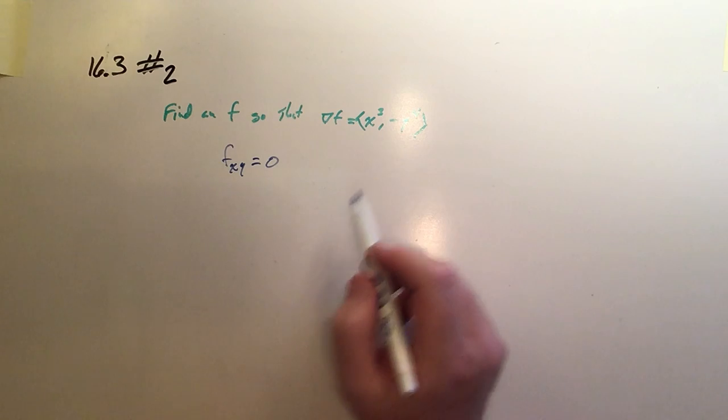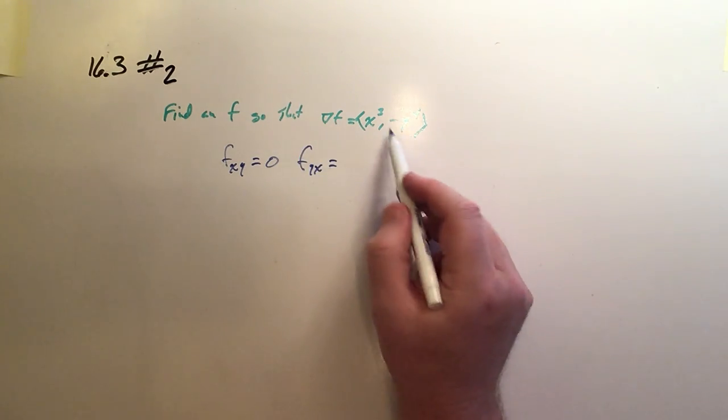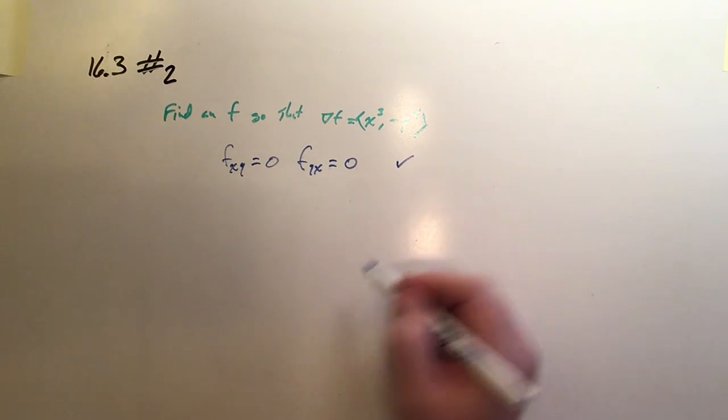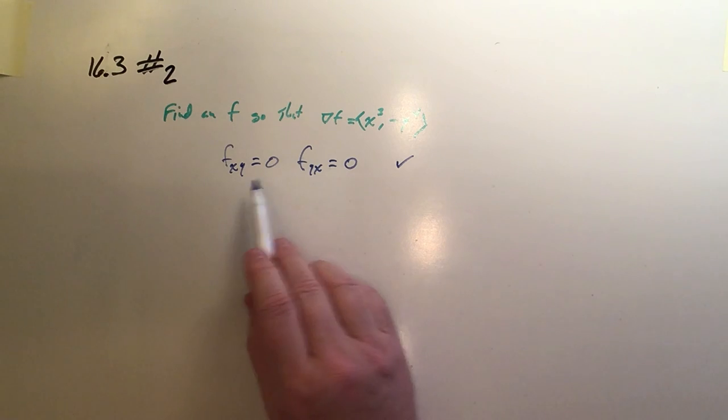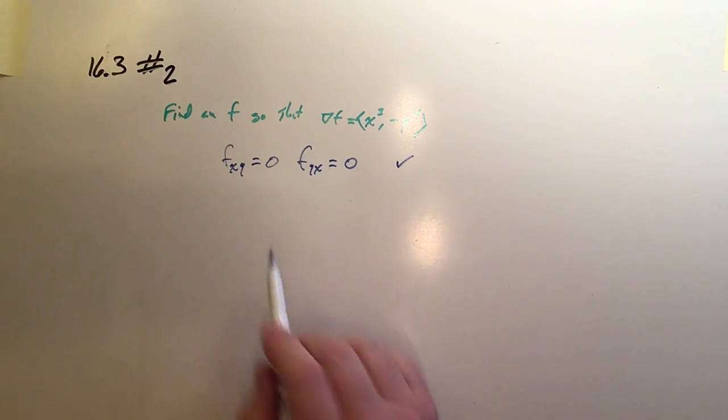And then if this is the first partial with respect to y, then f_yx would be the mixed partial, and the derivative of this with respect to x is 0. So this checks out because the mixed partials are equal. That means an f does exist that has this as its gradient.